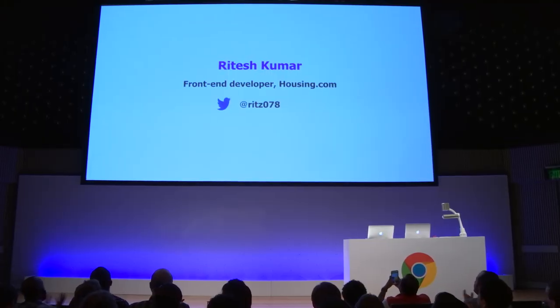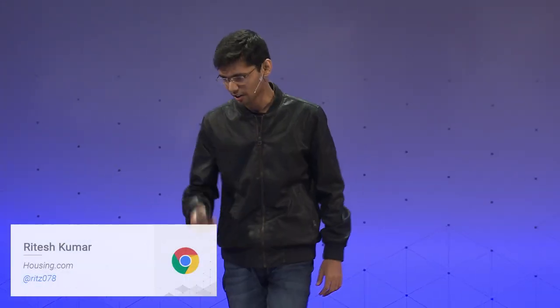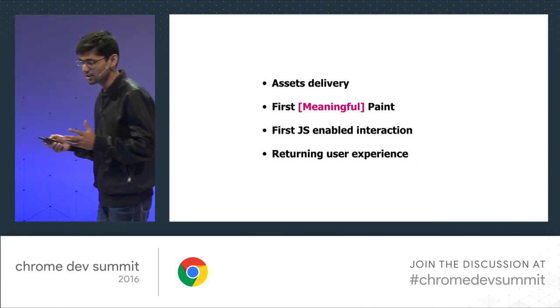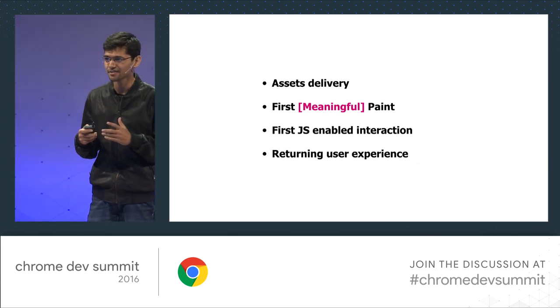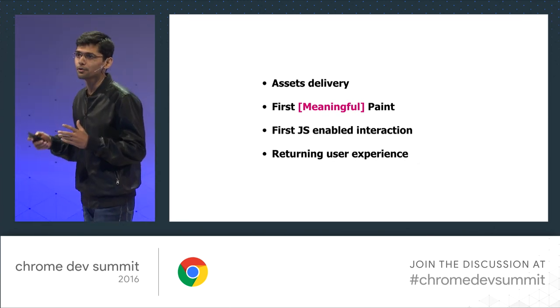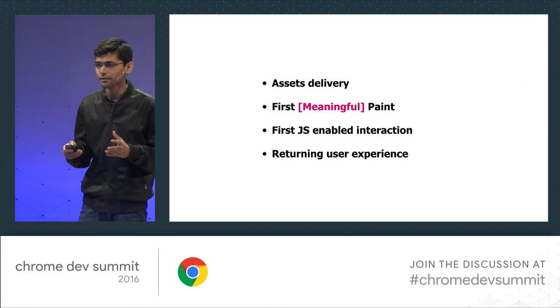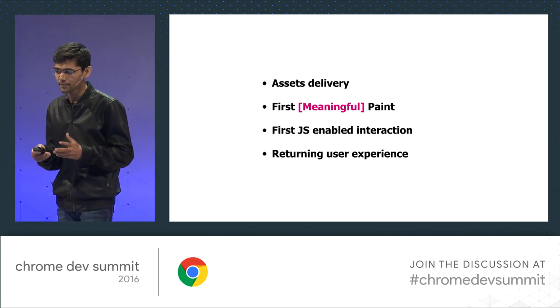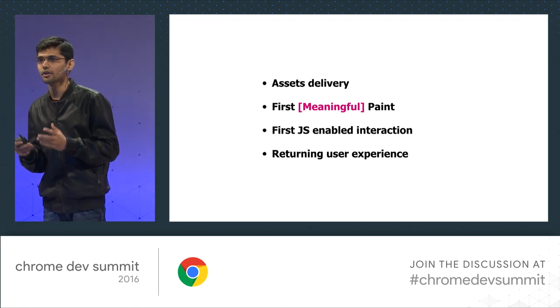I'd like to call up Ritesh, who will take us through the journey of how we built this. I'm Ritesh, a front-end developer at Housing.com. From the start, we were focusing on four key areas: we wanted to deliver assets fast, bring down the time to first meaningful paint, reduce the first JS-enabled interaction time, and improve the experience of our returning users.